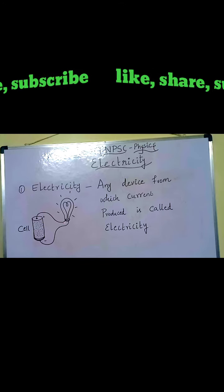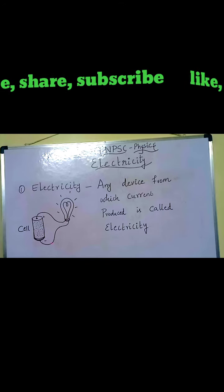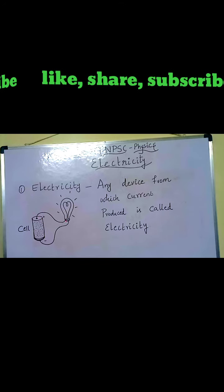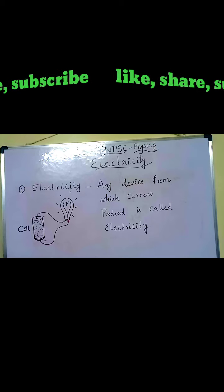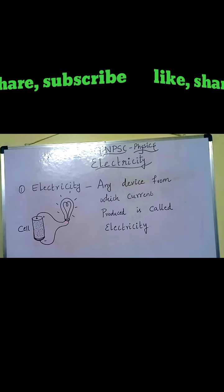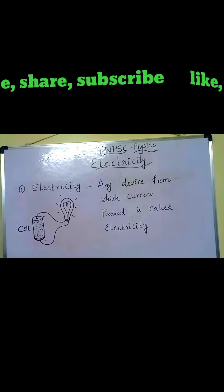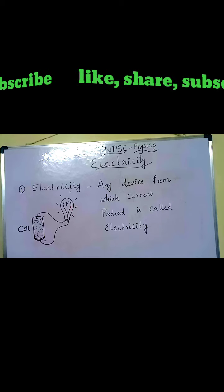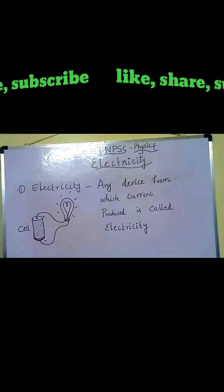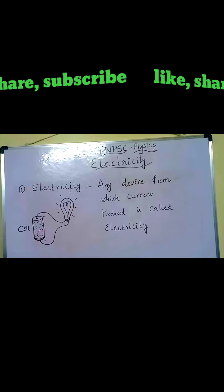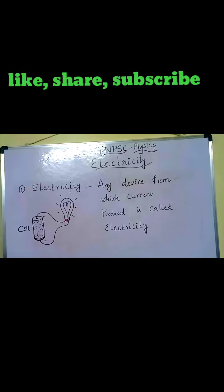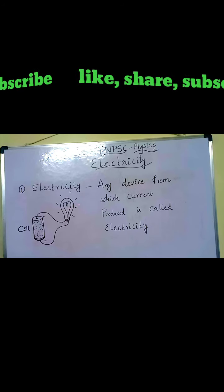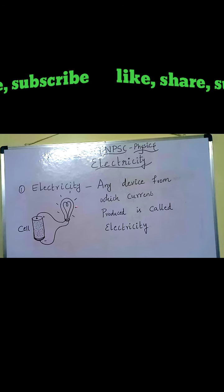We connect a bulb. The bulb has a positive and negative. Once it's connected, the bulb will glow. That is the current — that is called electricity. The cell and the device connect with the current flow. This is the current output.